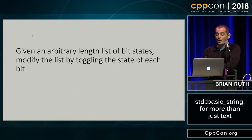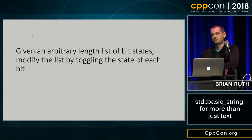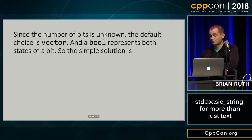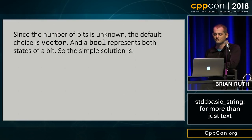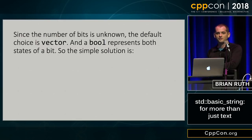Given an arbitrary length list of bit states, modify the list by toggling the state of each bit. If you just start out, the basic choice is always going to be vector, because you don't know how long the list of bits is going to be. And a bit can either be on or off, so bool is the obvious representation.